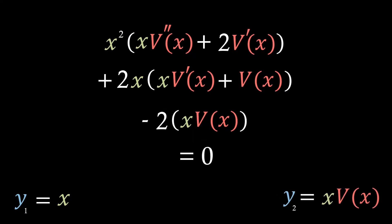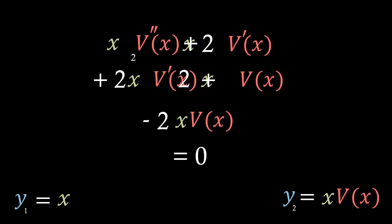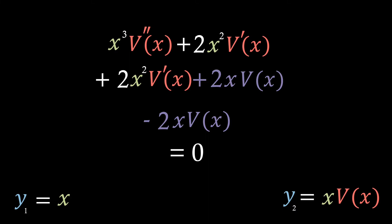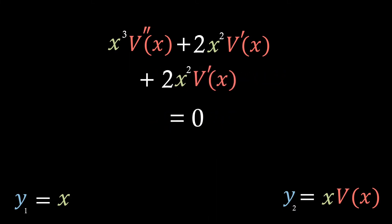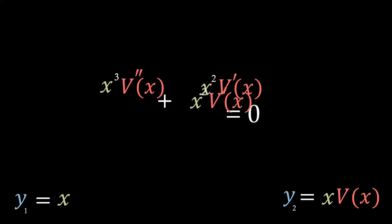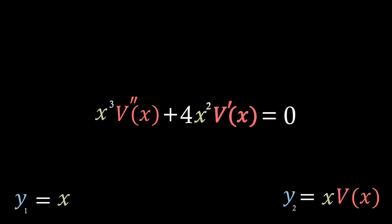This looks more like an expression we may be able to solve, so let's expand those brackets. If this method is performed correctly, the v of x terms will cancel each other out — which is exactly what they do here — giving us a much easier expression to solve. We can also see that we can combine the first differential of v of x terms, giving us 4x squared times the first differential.